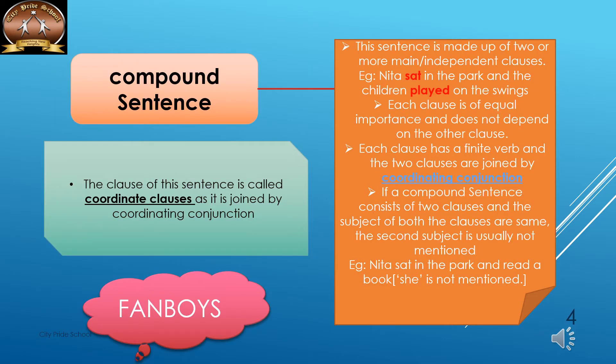A compound sentence is made up of two or more independent clauses — the two clauses will not depend on each other. For example, 'Nita sat in the park and the children played on the swings' — there are two clauses, both are main clauses. 'Nita sat in the park' has one finite verb, and 'the children played on the swings' — 'played' is the finite verb.